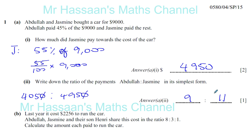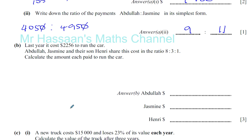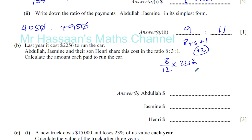Last year it cost $2,256 to run the car. Abdullah, Jasmine, and their son Henry share this cost in the ratio 8 to 3 to 1. Calculate the amount that each of them pays to run the car. The classic way of doing this is: there are 12 parts altogether — 8 plus 3 plus 1. Abdullah pays 8 out of 12 parts, and Jasmine pays 3 out of 12 parts, which is a quarter of the total.